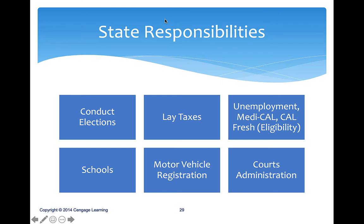State responsibilities — using California as an example — include conducting elections. The Secretary of State sets up elections and provides guidance to local governments. We have a registrar of voters in each county who runs the elections. States can also lay taxes and help run federal programs like unemployment, which is a federal program administered by the state using both federal and state tax dollars.